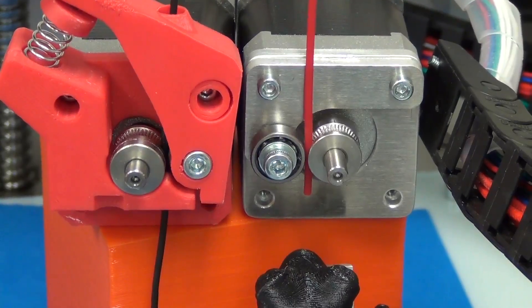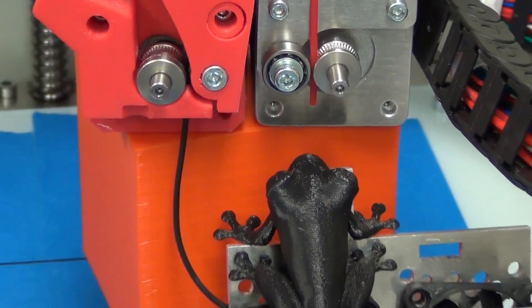So the one on the left, we were able to get very high quality prints. You can see the frog there, that's Ninja Flex Frog printed with the LeapFrog.